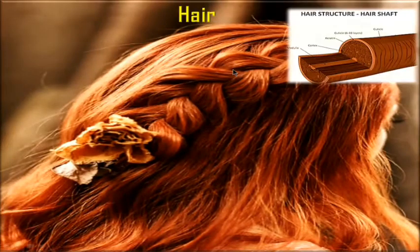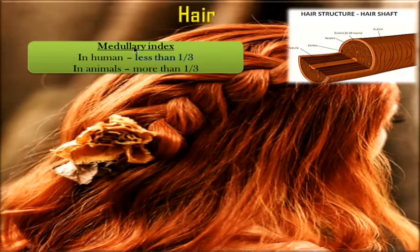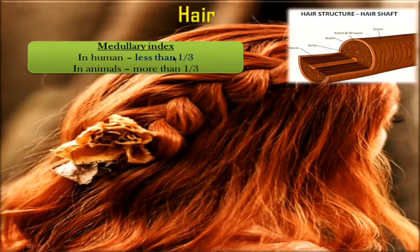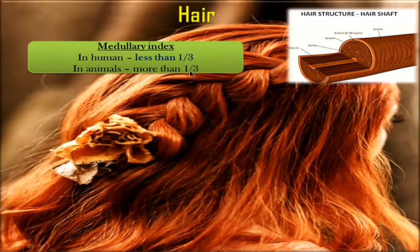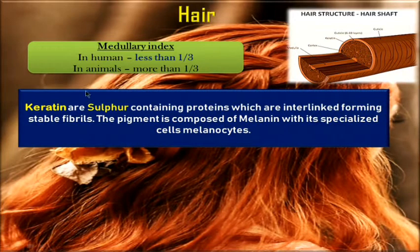Hair is a protein filament that rises from the follicles under the dermis. The main thing is the medullary index — this is the ratio of the diameter of the medulla to that of the hair shaft. This ratio is the major thing to differentiate human and animal hair. In humans it is less than one third, and in animals it is more than one third. This is important; they have asked this many times.